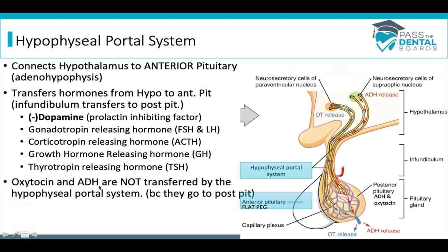Importantly, oxytocin and ADH are not transferred by the hypophysial portal system, because they're stored in the posterior pituitary gland in the herring bodies. They are often used as distractors in questions about this blood highway. Pathology questions may describe conditions that increase or decrease function of the portal system, asking about the downstream effect on anterior pituitary hormones.